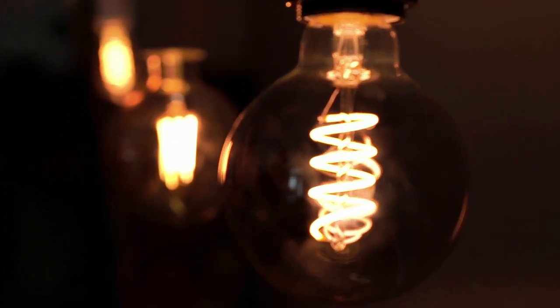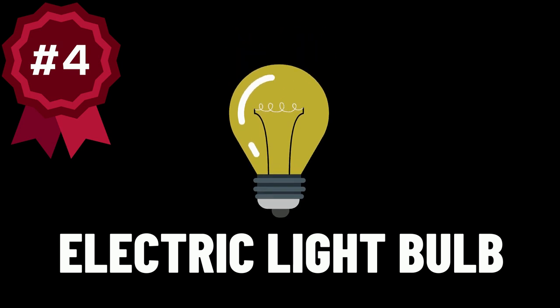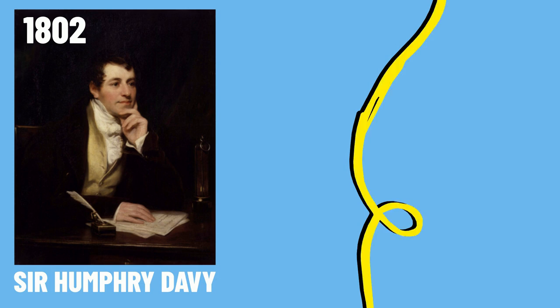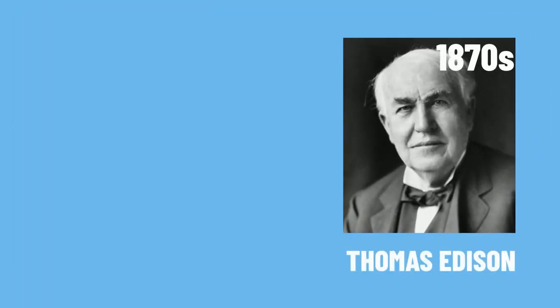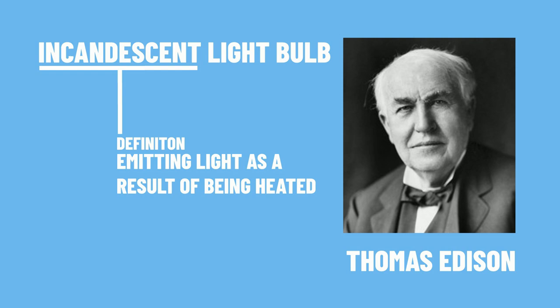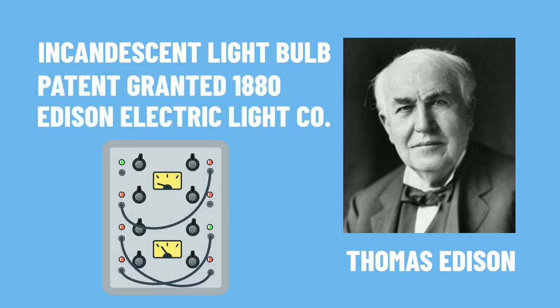Let's move on to something a bit more proper: our next invention is the electric light bulb. For its history we need to go back to 1802, where Humphrey Davy was the first person to make an electric current flow through a wire, making the wire first hot and then giving out light. But it wasn't until the 1870s when American inventor Thomas Edison created an incandescent light bulb — the word incandescent means emitting light as a result of being heated. Edison was granted his patent in 1880 and went on to establish the Edison Electric Light Company.